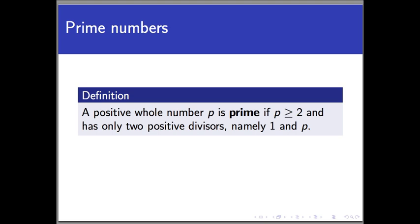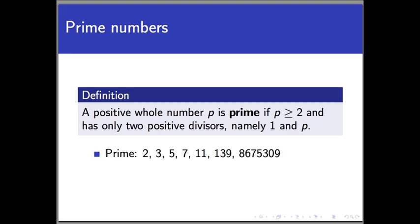So the numbers 2, 3, 5, 7, 11, 139, my favorite prime number 8675309, which was immortalized in a catchy tune from the 80s, are all prime numbers because they are whole numbers. They are all bigger than 1, bigger than or equal to 2, that is, and can only be evenly divided by 1 and themselves.